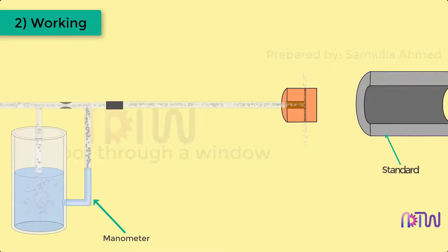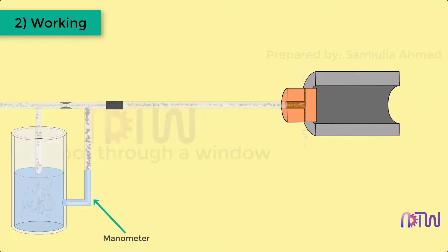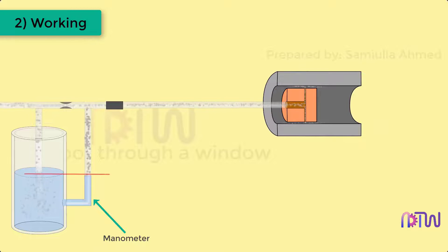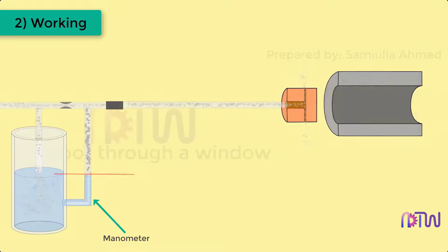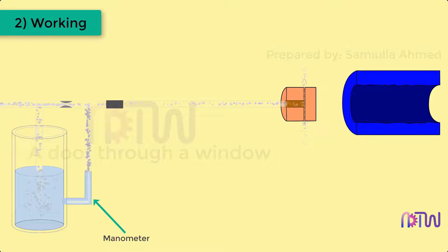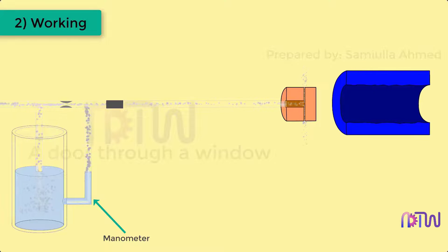At first, a standard workpiece is taken in which the internal wall is perfectly flat. This standard workpiece is used to calibrate the pneumatic comparator. Using this standard workpiece, the water height in the manometer is adjusted so that it is equal to the height of water in the tank. This standard workpiece is known as a reference workpiece because it is used to get the reference pressure in the manometer.